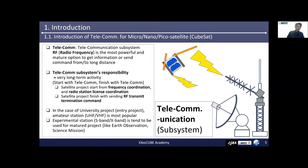If you can use some existing ground station facilities, the workload can be smaller. In some cases, an amateur radio station and an experimental station are installed on one satellite at the same time. But the scope of work must be separated based on the respective legal laws and rules.